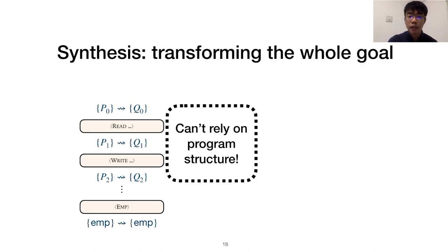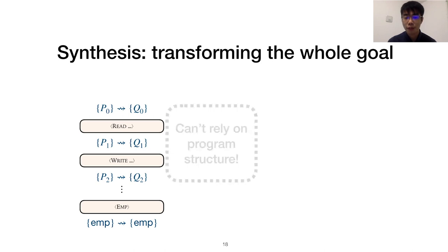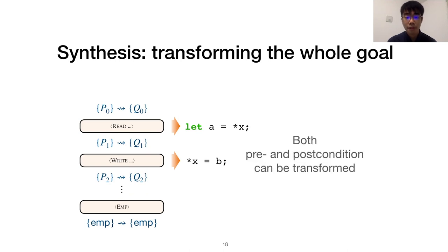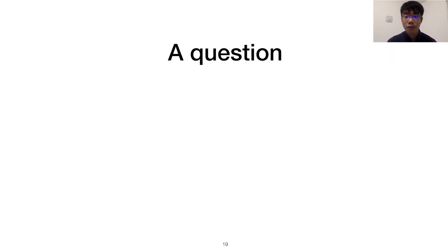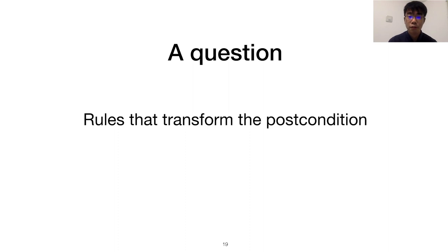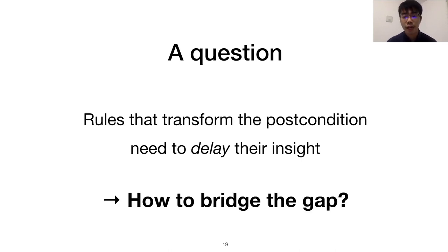In contrast, during synthesis, we can't rely on an existing program structure, since that's what we're trying to derive. Instead, each successful application of an inference rule incrementally transforms the specification until it becomes a trivial entailment. Here, both the pre- and post-condition are transformed. For this reason, when SSL rules transforming the post-condition appear earlier in the synthesis proof tree, their insight needs to be deferred to the end of the verification proof. So one big question is how to bridge these two different styles of reasoning.